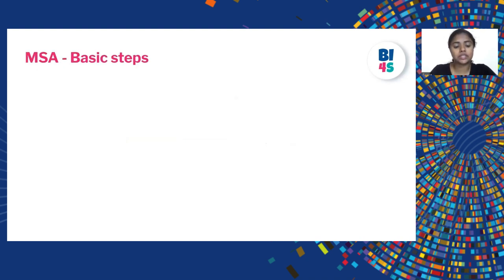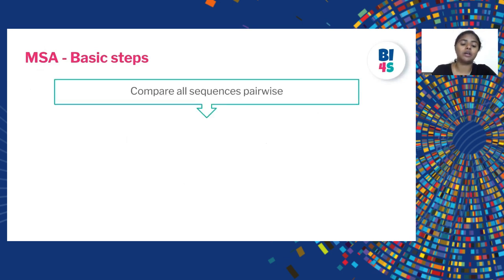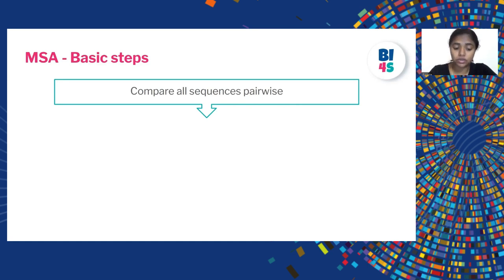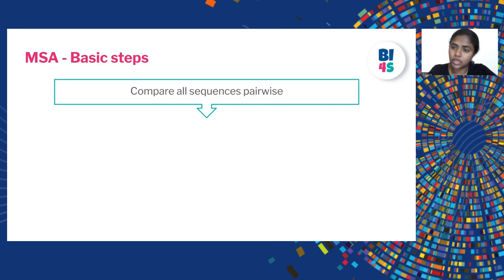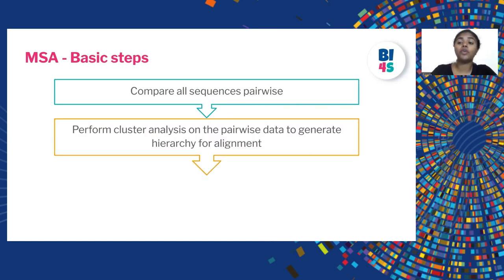There are basic steps behind building multiple sequence alignment. We can't directly take all the sequences and align them because it's not feasible. What we do is compare all sequences pairwise. For example, if three input sequences are given — sequence A, B, and C — sequence A is first paired with sequence B and a pairwise alignment is constructed, then A is paired with C, and then B and C pairwise sequence alignment is done. We try to find all the possible combinations.